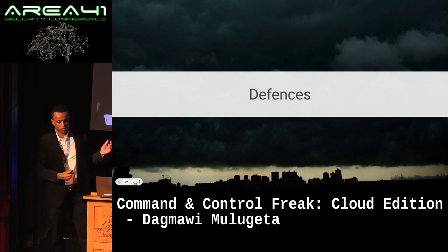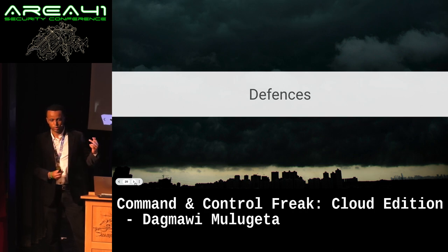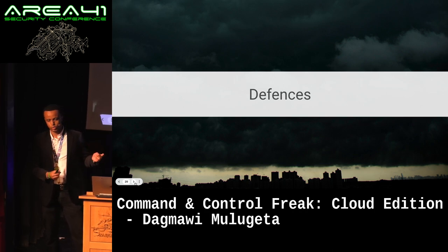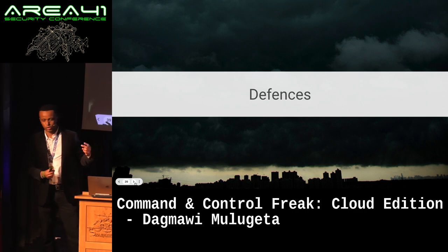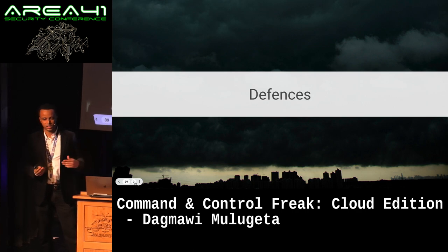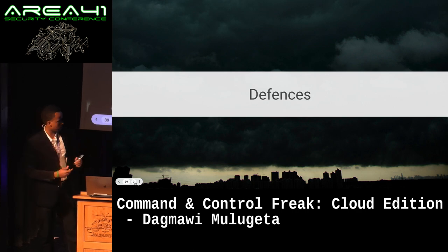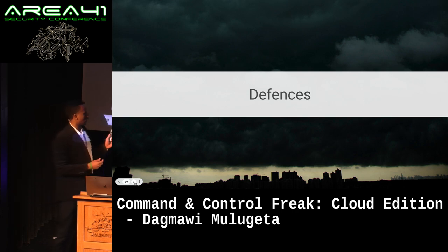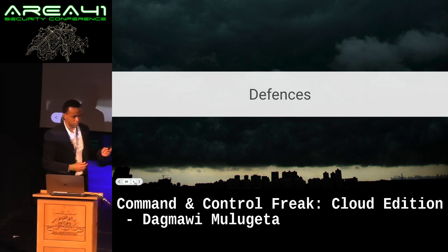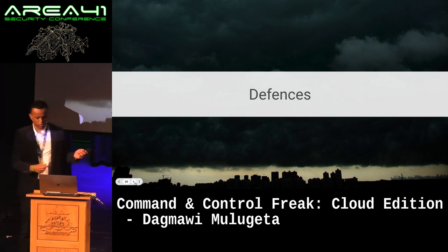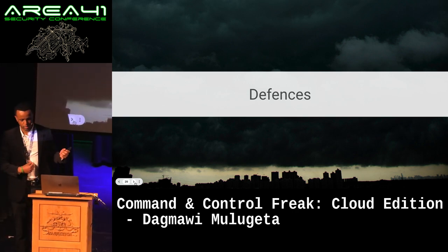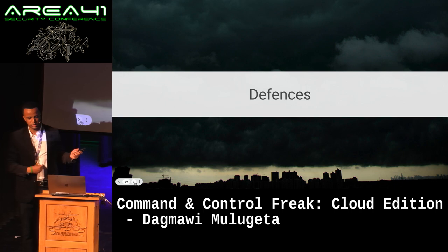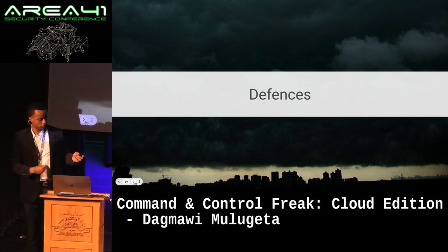Then we went over a deep dive and saw how you could abuse two particular apps — Dropbox and Slack — to send commands back and forth. Now, in this section, we want to cover: if you've identified that an app isn't being detected, what can you do?